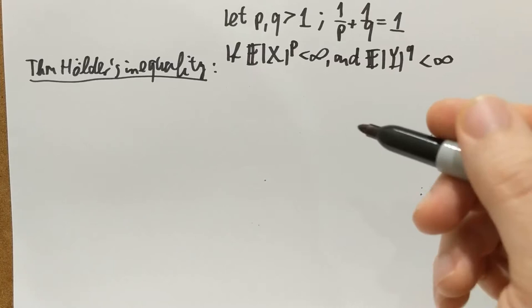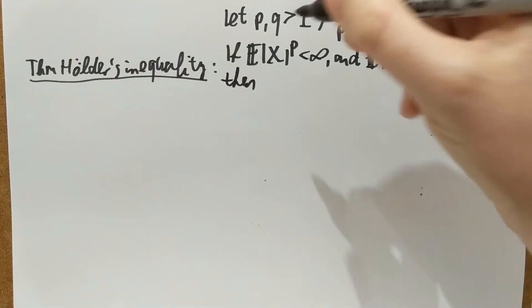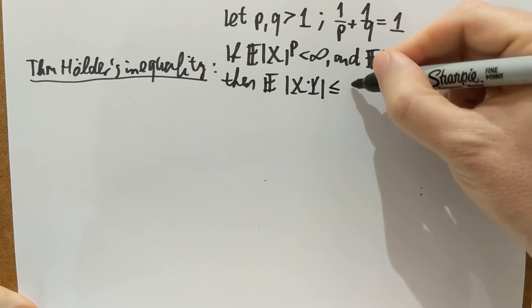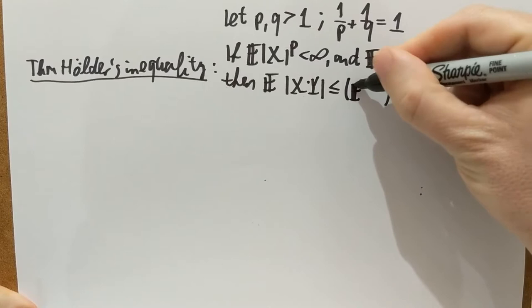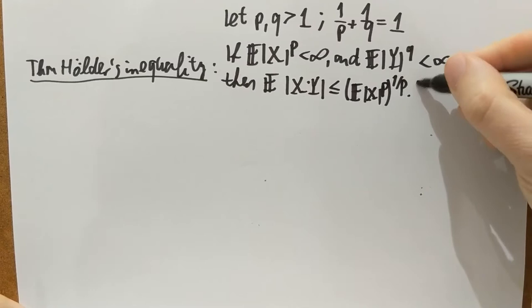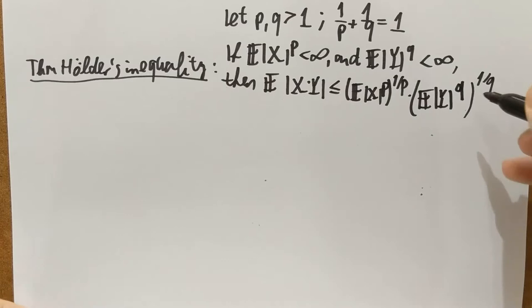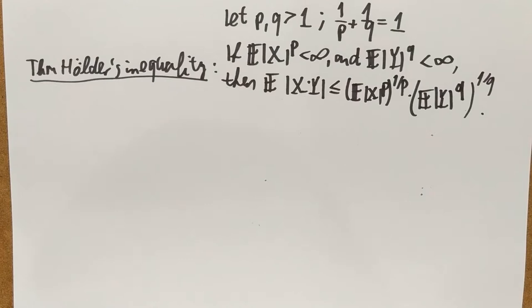Assume that the P-th moment of X and the Q-th moment of Y are both finite. Then the statement of this theorem is that the expectation of the absolute value of the product is bounded by the 1 over P power of the P-th absolute moment of X, multiplied by the 1 over Q power of the Q-th absolute moment of Y. This is true for any P and Q such that 1 over P plus 1 over Q equals 1, with P, Q at least 1, and any random variables X and Y.